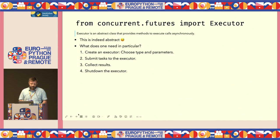The first type we look at is Executor. If we break it down, what it really does — looking at its API methods — is: we create an executor and choose some parameters, we submit tasks to it, we collect and wait for results, and then we eventually shut down the executor. That's the lifecycle of our concurrent workloads.